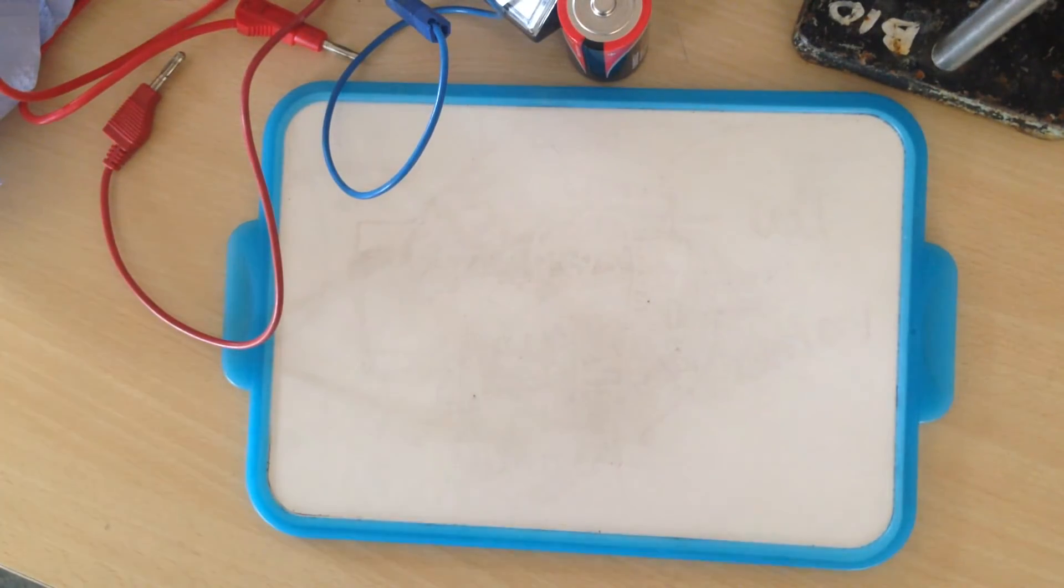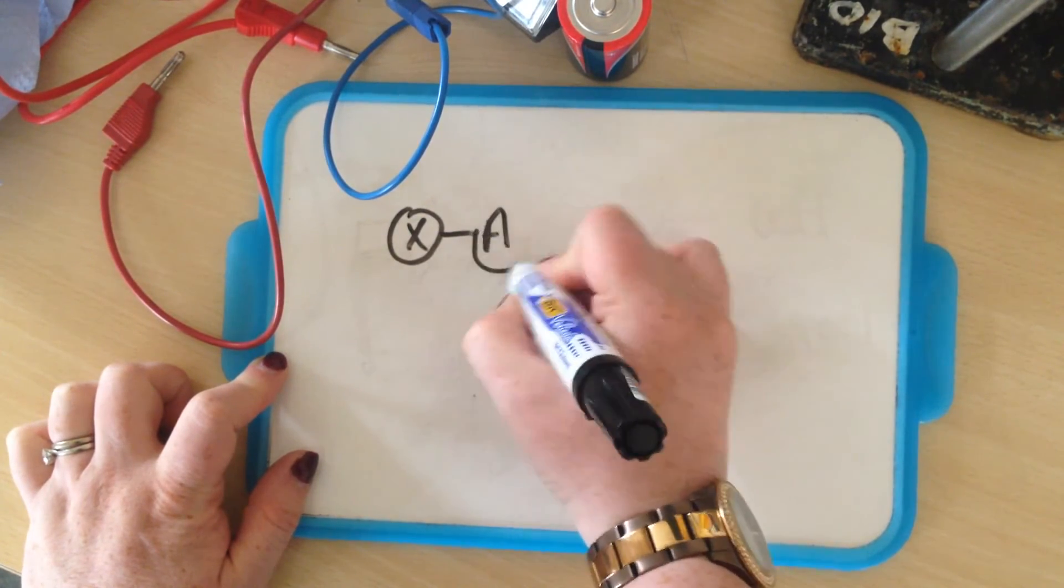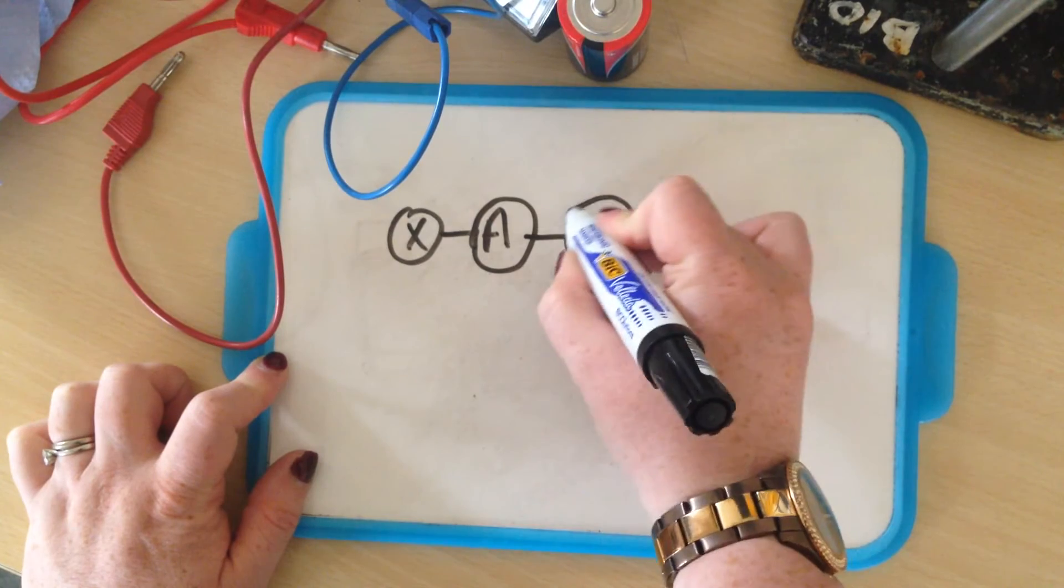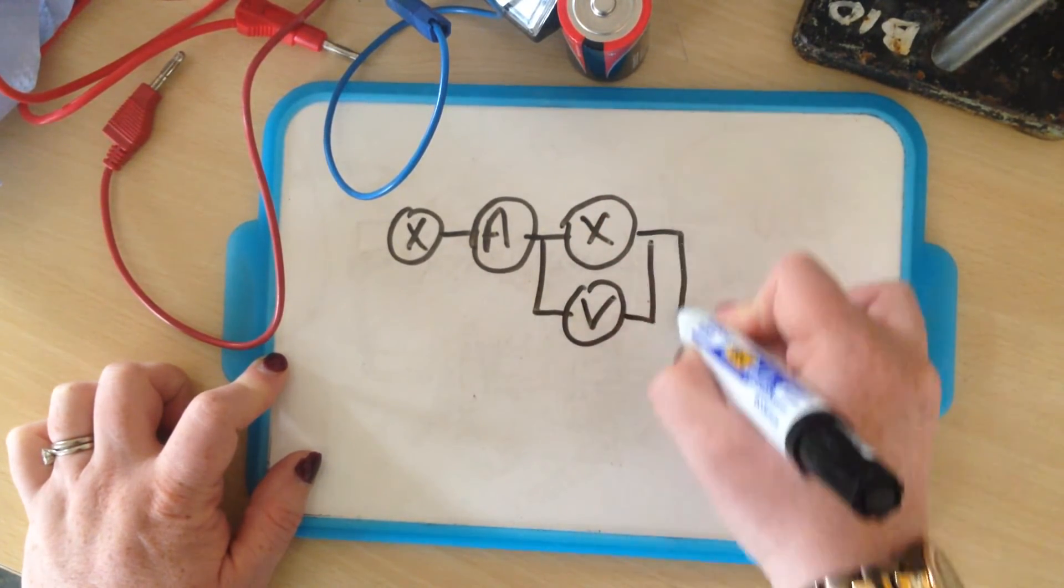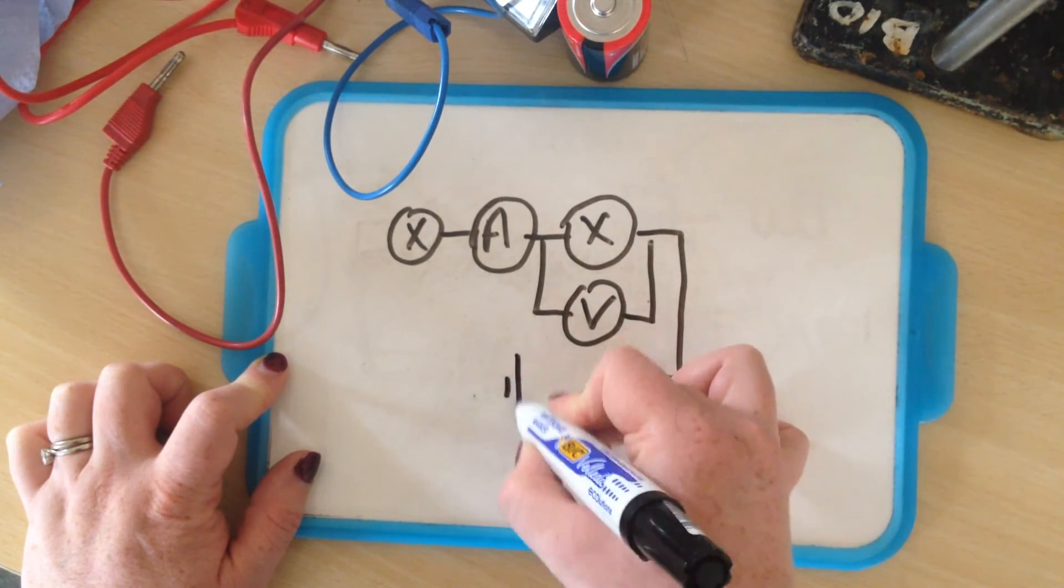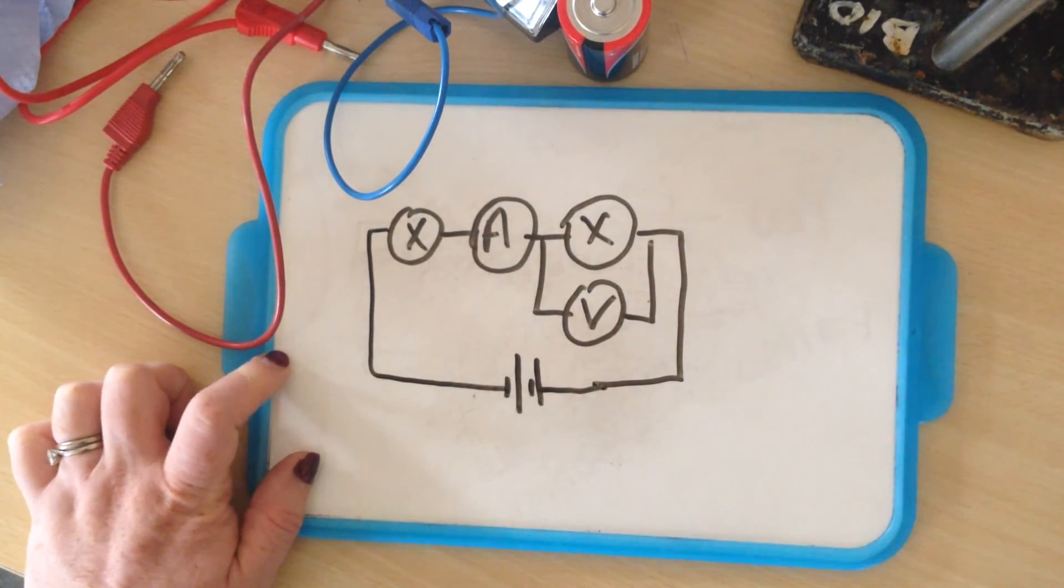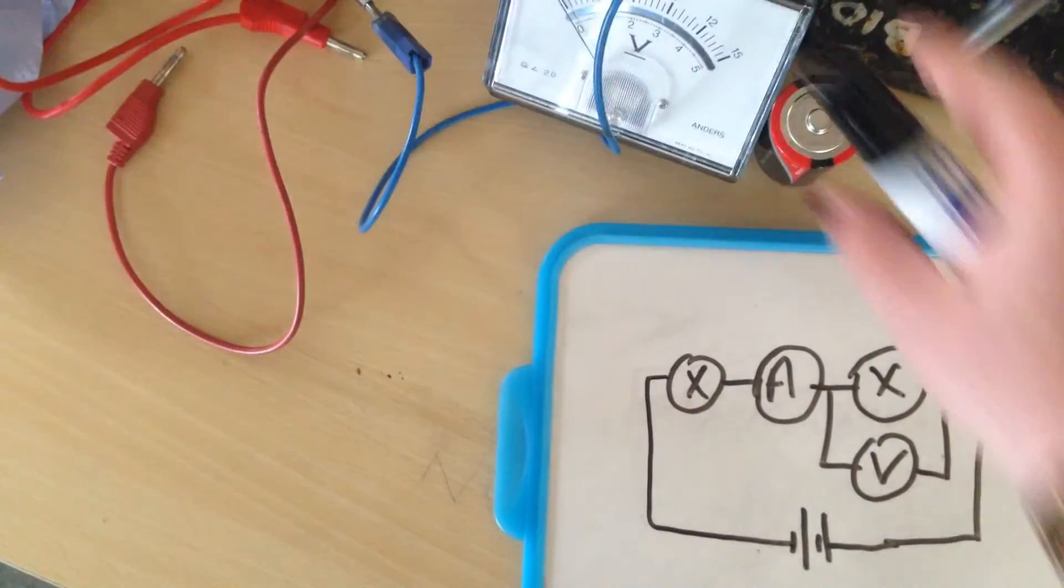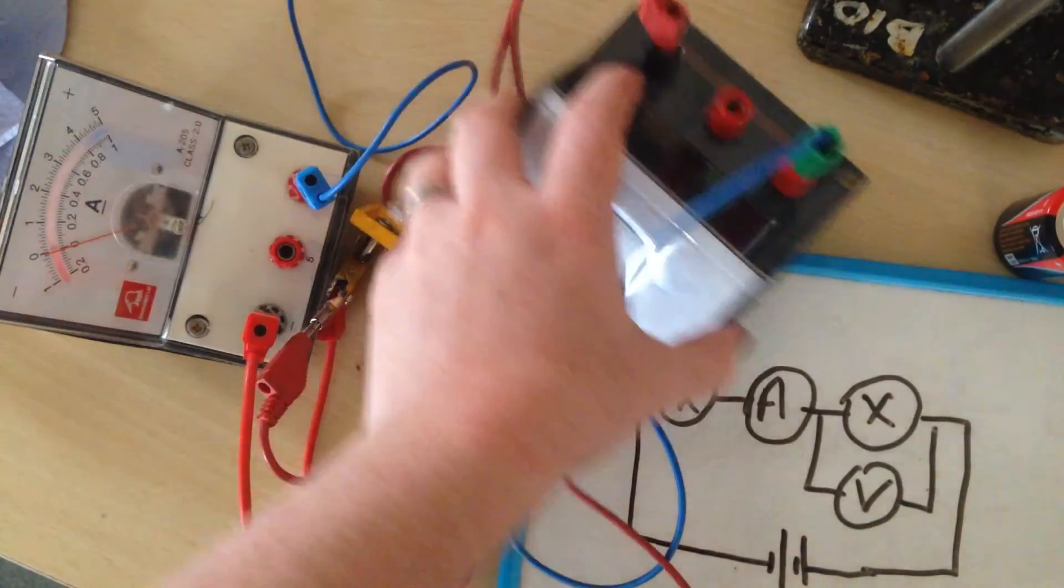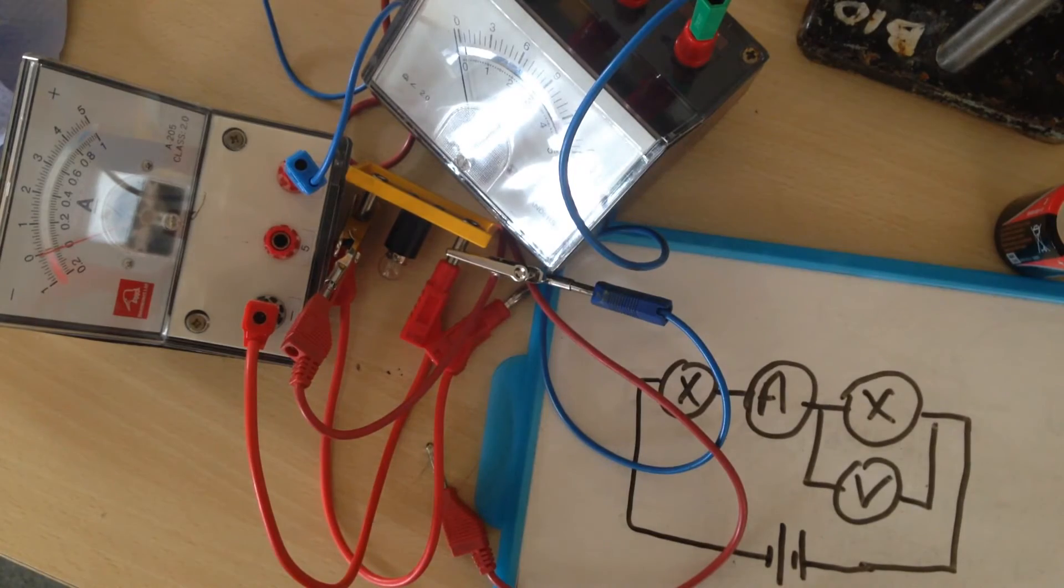Okay, so that last circuit was quite complicated. I had a bulb which was connected to an ammeter, which was connected to another bulb, which across that bulb I had a voltmeter, and then I have my battery. So lots of things going on in that circuit there, but you can see how this looks a lot neater than this. This is much easier to understand, which is why we use circuit diagrams, even though they do seem quite annoying and complicated.